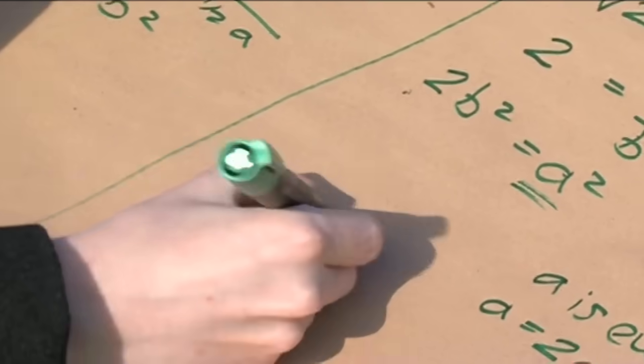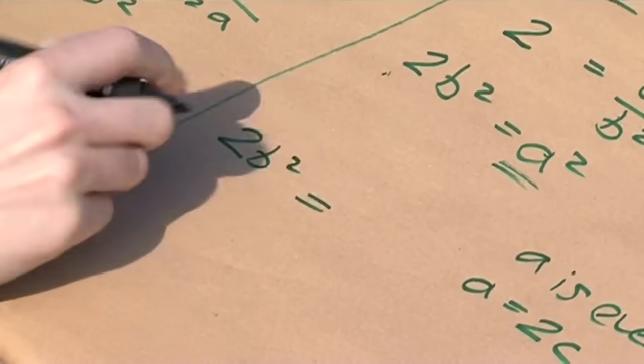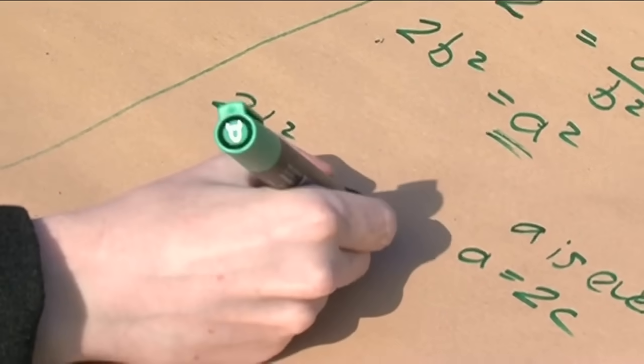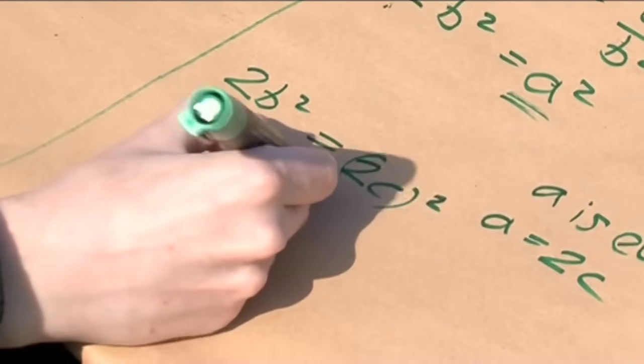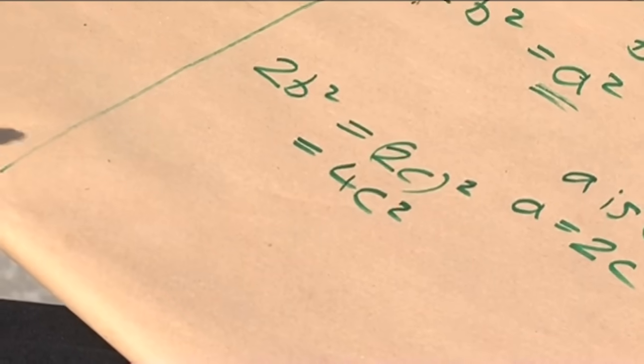2b squared on the left hand side is 2 times c, because it's even, squared. This is equal to 4c squared.